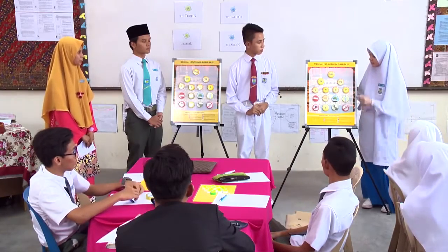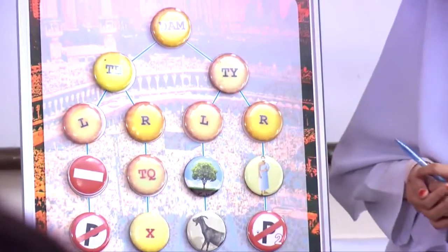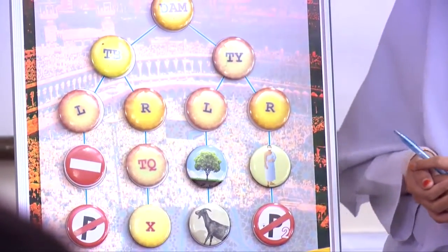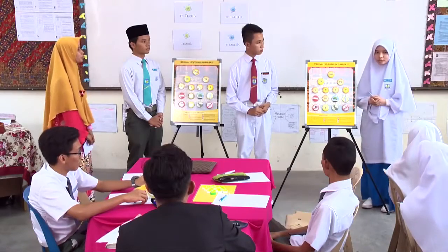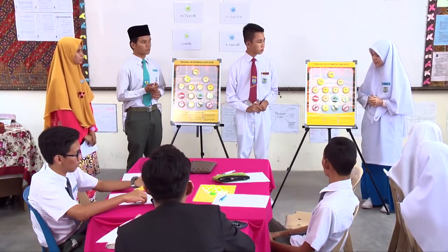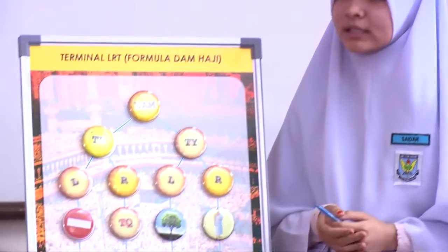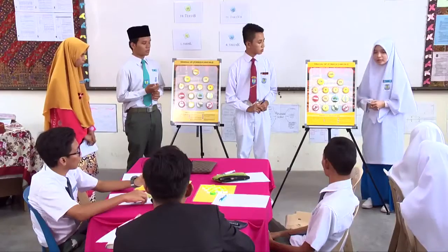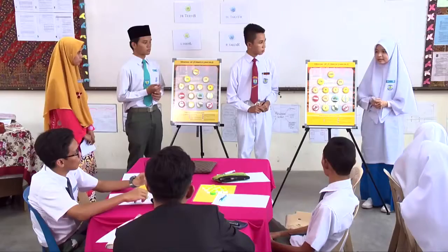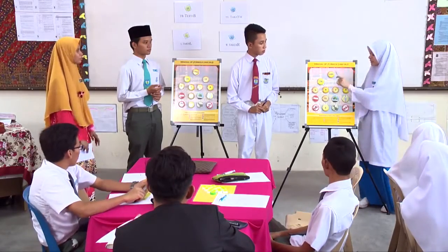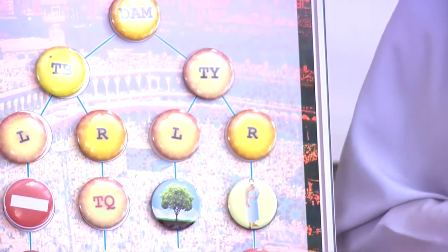Sekarang kita tengok pula untuk TY left dan right. Okay, dalam Tahir Takdil, dia seolah-olah berkonsepkan flora dan fauna kerana ia berkenaan tumbuhan dan juga haiwan. Kesalahan-kesalahan yang melibatkan tumbuhan contohnya seperti memetik bunga-bungaan, memotong pokok-pokok akan dikenakan dam. Bagi haiwan pula jika menyembelih ketika dalam ihram atau menyakiti atau memburu haiwan di sana, kita akan dikenakan dam. Dam Tahir Takdil.